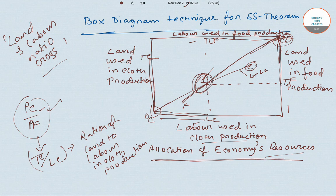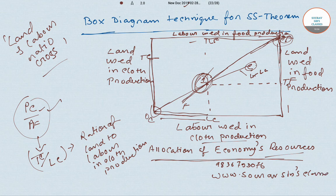So where the land-labor ratio lines cross, we get the allocation of economic resources — the equilibrium level. I hope you've understood. If you have any queries, WhatsApp me at 9836793076 or visit our website www.shorobsursclasses.com for more videos and study materials for entrance exams. Thank you for watching and have a nice day.